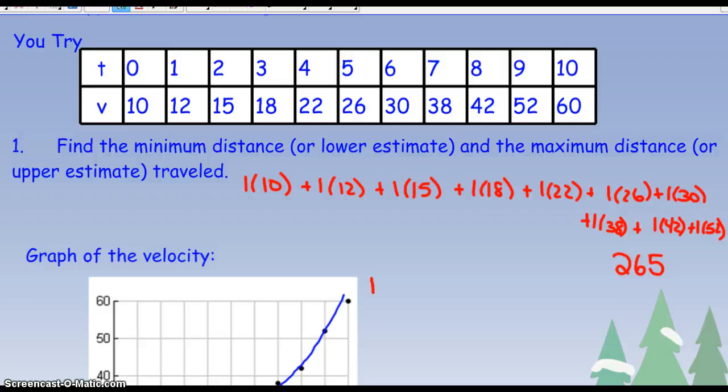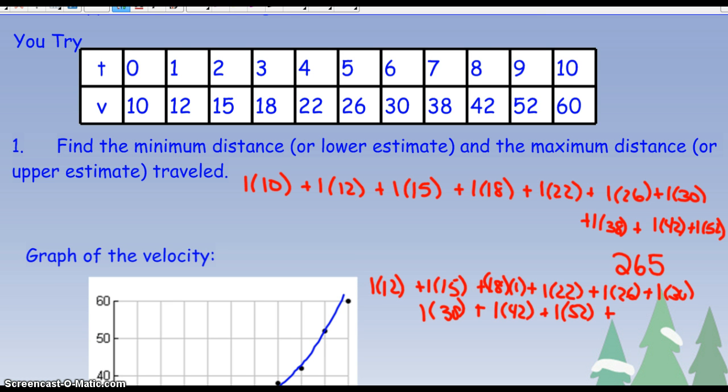I can also look and now look at the maximum value and say, okay, 1 times 12, 1 times 15, 1 times 18, 1 times 22, 1 times 26, 1 times 30, 1 times 38, 1 times 42, 1 times 52, and 1 times 60. And that gives me a total of 315 when I add those together. So I can see the minimum estimate and the maximum, the over and under.